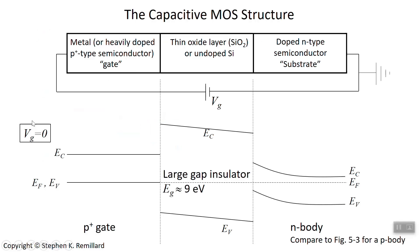Now we have our three-layer structure: metal, oxide, and semiconductor. The metal, in most practical situations, is actually a degenerately doped semiconductor. We'll use a P-type semiconductor so heavily doped that its Fermi energy is driven right down to the valence band — a P-plus gate, where 'plus' means degenerately doped. The fabrication process: take a chunk of silicon, n-dope it, grow some oxide on the surface by oxidizing it, then deposit more silicon and dope it heavily P-type.